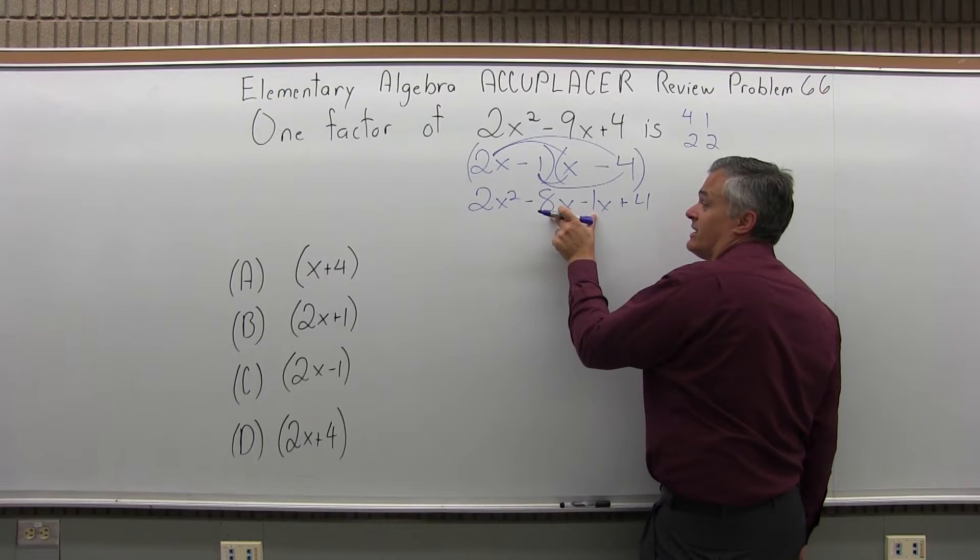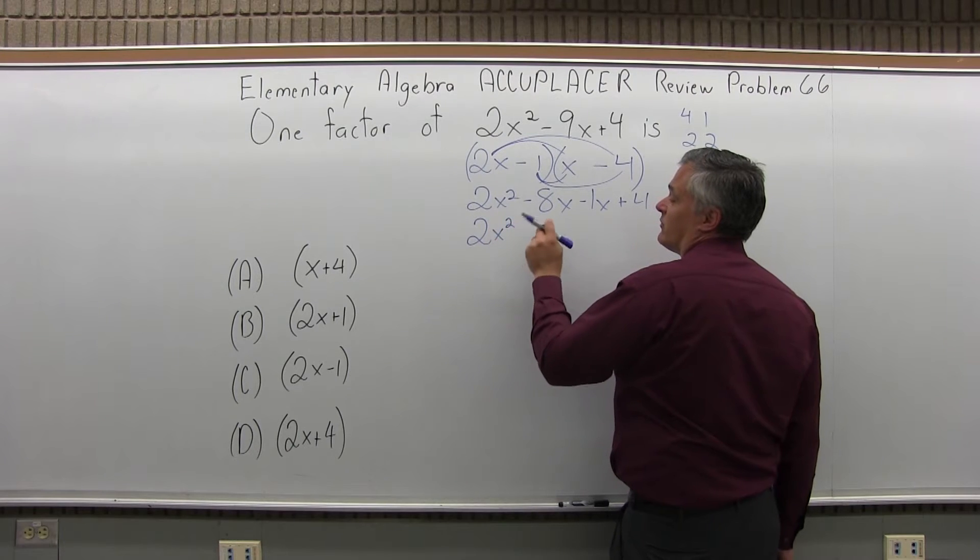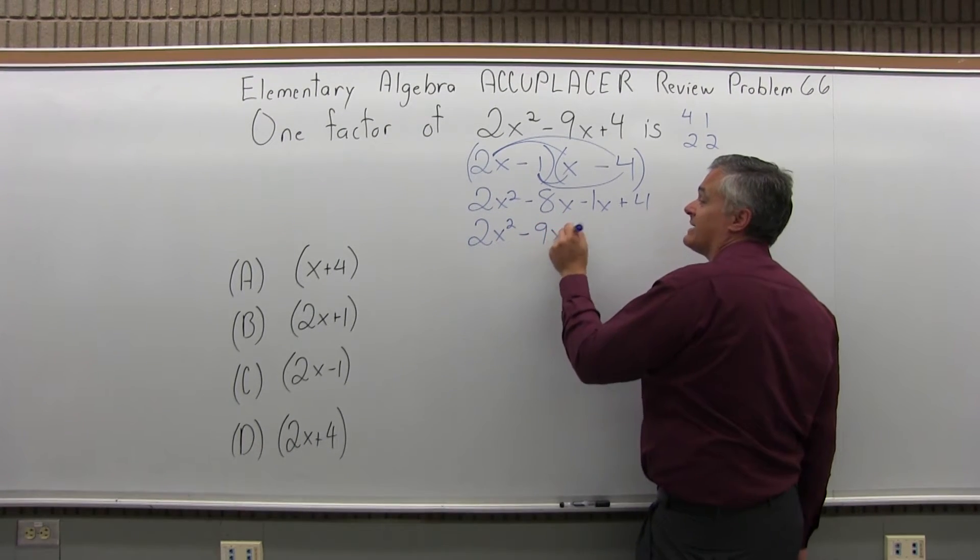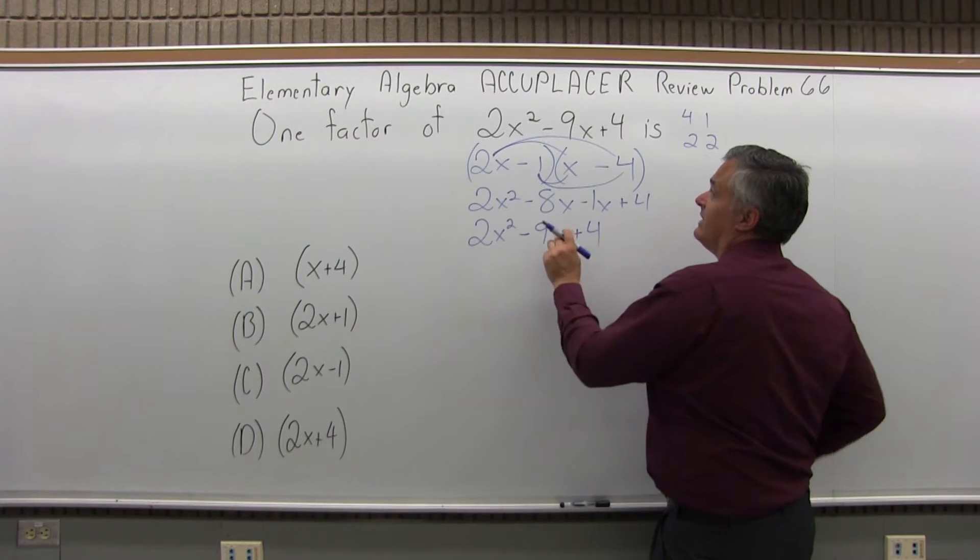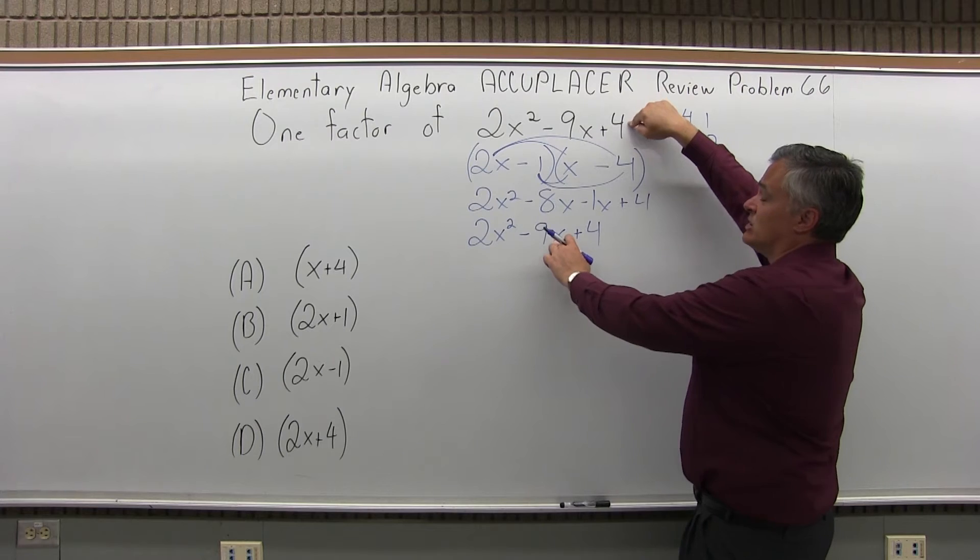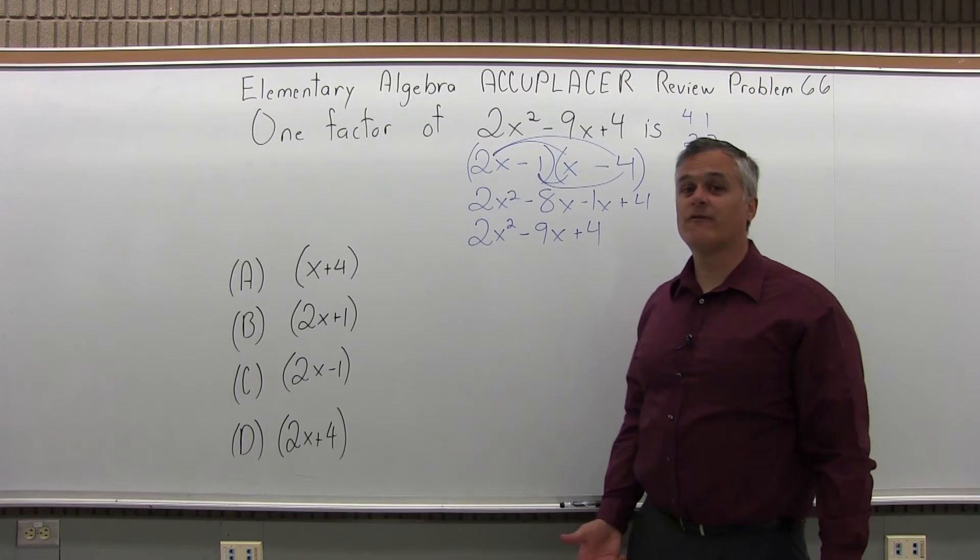Combine the two pieces in the middle, the negative 8x and the negative 1x. So I'll leave my 2x squared in front. Negative 8x and negative 1x is negative 9x. I have a plus 4 on the end. It does multiply out to give me back the original question. So my factoring of 2x minus 1 times x minus 4 is the correct factoring.